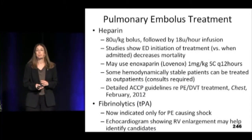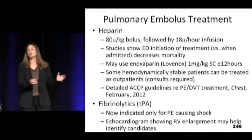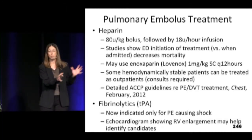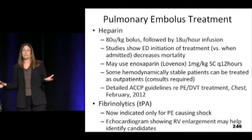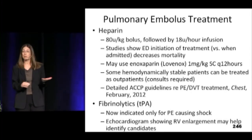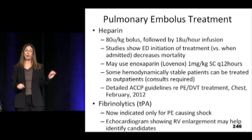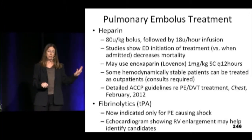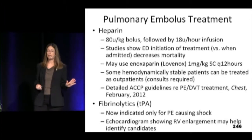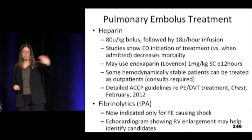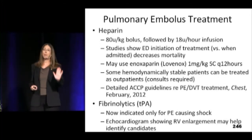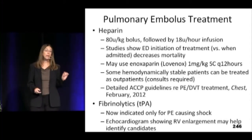Treating people with PE — the big conundrum is diagnosing it; the treatment's not that big a deal. Treatment is basically heparin, either unfractionated infused or low molecular weight heparin. The newer anticoagulants are coming down the pike for treating DVT and PE, but right now heparin is what's recommended. Some patients can be treated as outpatients — in Canada they send them home frequently if someone is young, healthy, has good cardiopulmonary reserve, not very hypoxic, not very symptomatic, you can send them home with low molecular weight heparin bridging to Coumadin.